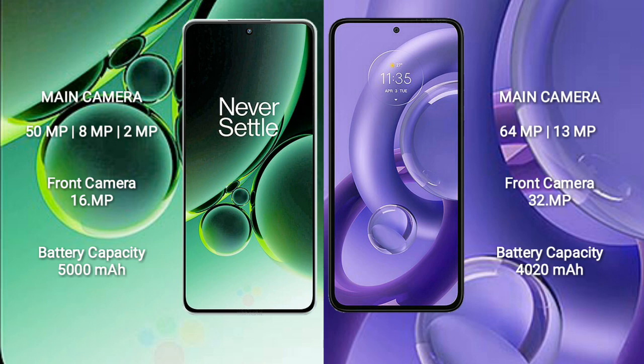OnePlus Nord 3 comes with a 5000mAh battery with 80W fast charging support. Motorola S30 Neo comes with a 4200mAh battery with 68W fast charging support.